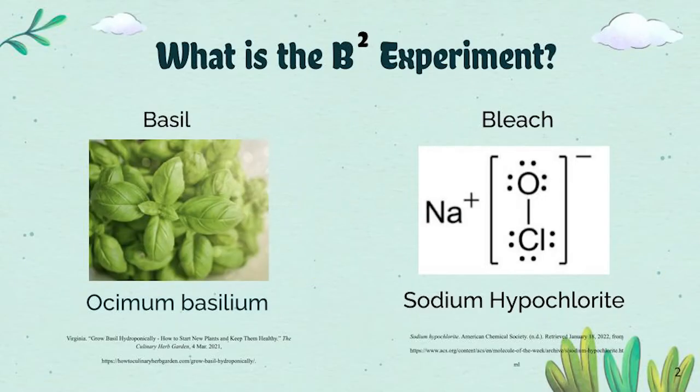Now you may be asking yourself, what is the B-squared experiment? Well, it's how does bleach affect the growth of basil plants. The scientific name for bleach is sodium hypochlorite and the scientific name for basil is Ocimum basilicum — definitely a tongue twister.